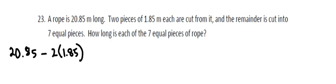So, we have a rope that's 20.85 meters long, and we're going to subtract from that, or cut off from that, two pieces of length 1.85, and that should leave a total length of 17.15 meters.